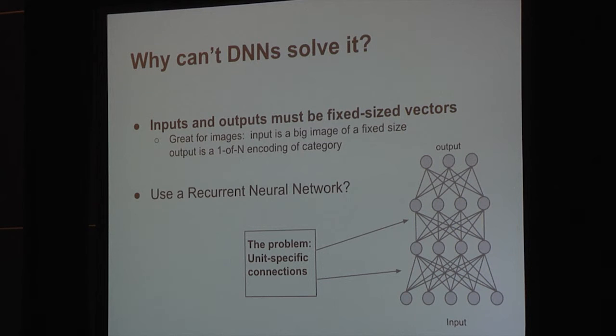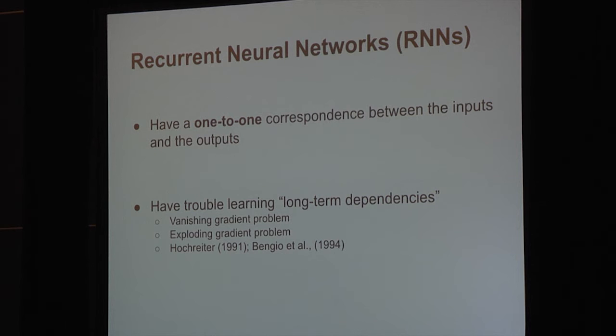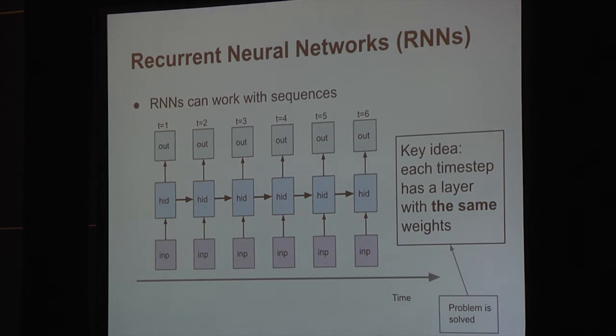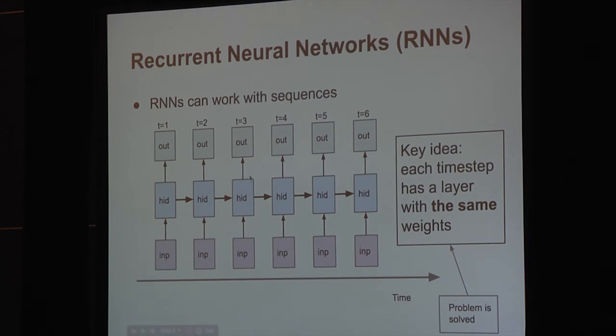So you might say, what about the recurrent neural network? Here is a recurrent neural network in this figure, and a recurrent neural network is basically a regular conventional neural network where you use the same connections at each time step. You can take a sequence of inputs and map it into a sequence of hidden units and get a sequence of outputs. The main problem with recurrent neural networks is that there is a one-to-one correspondence between the inputs and the outputs. You may have a sequence of inputs, and you produce a sequence of outputs, but both sequences are going to be of the same length, and they'll have the same alignment.